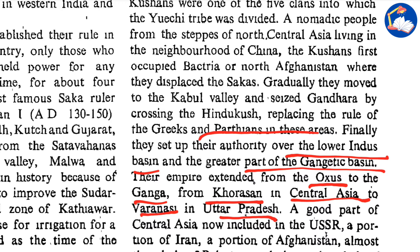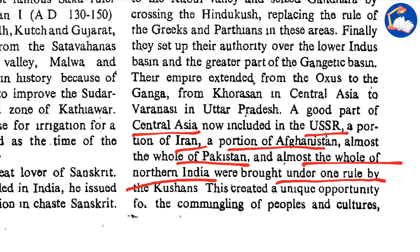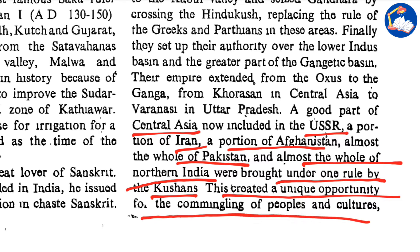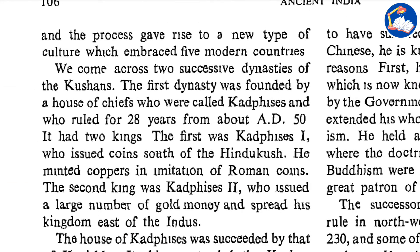That was a vast empire. A good part of Central Asia now included in the former USSR or Russia, a portion of Iran, a portion of Afghanistan, almost the whole of Pakistan, and also the whole of northern India were brought under the one rule of the Kushans. This created a unique opportunity for the intermingling of peoples and cultures, giving rise to a new type of culture which embraced five modern countries.